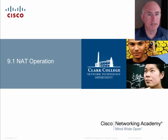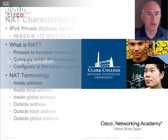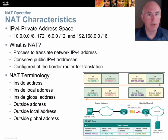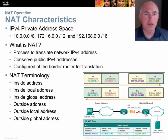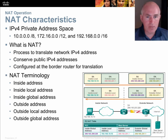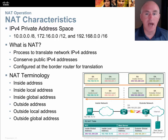Let's talk about the theory — NAT operation. NAT was created as one of three mechanisms to extend the life of the IPv4 address space. We added the idea of variable length subnet masks, or VLSM. We added the idea of NAT, network address translation. And with NAT came the private address spaces that you see here.